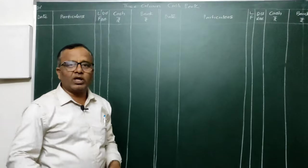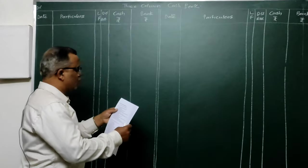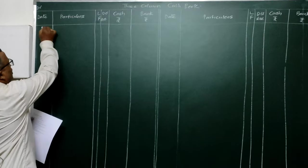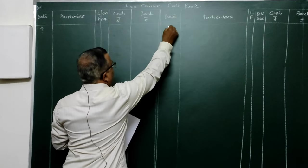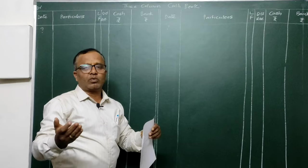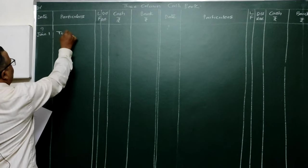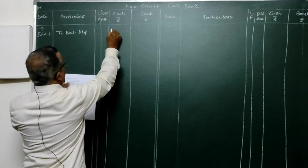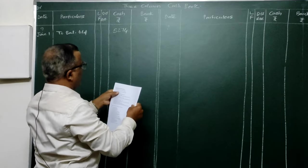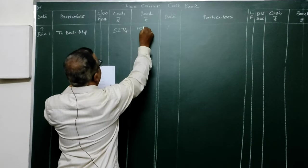If you remember these points, the three column cash book is very simple. Now for the first problem: June 1st, cash in hand — cash shows a debit balance, so write 'To Balance Brought Down' as the opening balance. Cash is 5375 in the cash column. Balance at bank is also showing a debit balance, so write 'To Balance Brought Down' — 15,000 in the bank column.